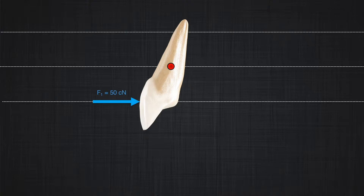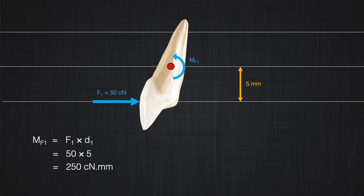F1 is applied with a five millimeter distance from the center of resistance. If you remember from the moment discussion, the magnitude of the moment would be equal to the magnitude of F1, that is 50 centinewtons, times the distance, that is five millimeters — therefore 250 centinewton-millimeters. This moment is applied counterclockwise. Let's calculate the magnitude of the moment for F2.